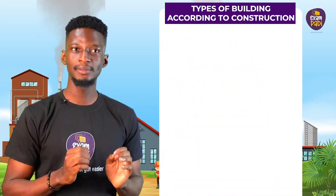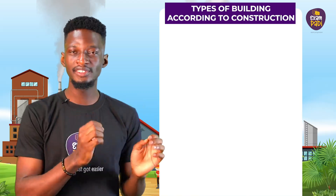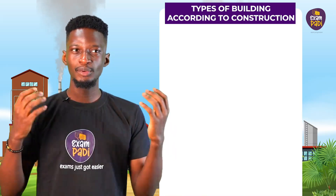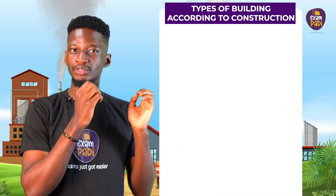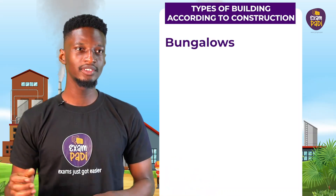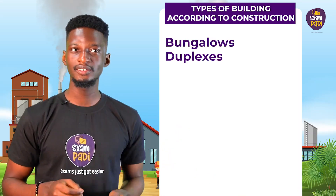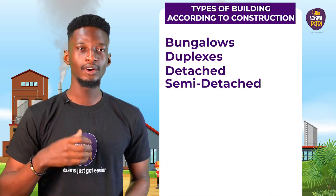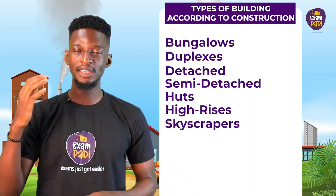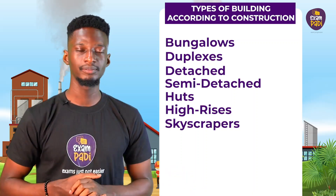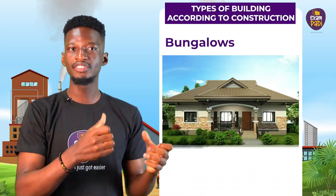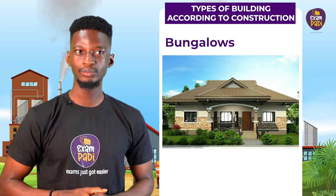Buildings are of many types and could be for commercial or residential purposes. A building can also be identified through its construction design. Examples include bungalows, duplexes, detached and semi-detached, huts, high-rises, skyscrapers and many others. 1. Bungalows: these are buildings that are only on the ground floor.